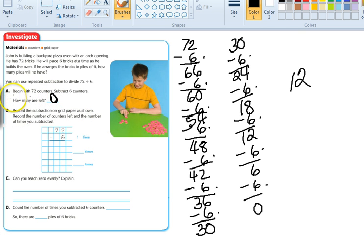Now the first step was begin with 72 counters, subtract 6 counters, so we did that. How many are left? We have 0 left. If 72 was not a multiple of 6, we would not have ended up at 0. We would have had, think about it, what would we have had? Leftovers, right, which we call in division remainders.